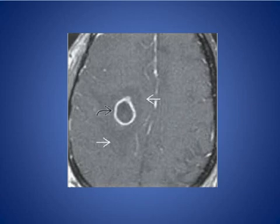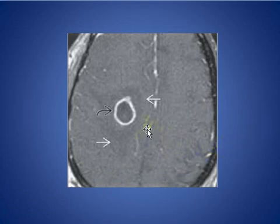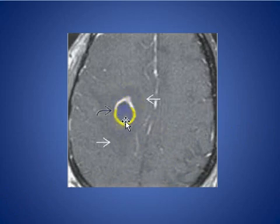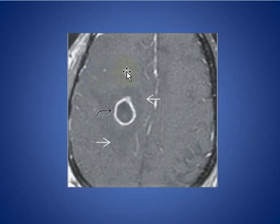Here we see on this axial MRI image a solitary ring-enhancing mass lesion with necrosis, smooth outline, and vasogenic edema — characteristic of a pyogenic abscess.